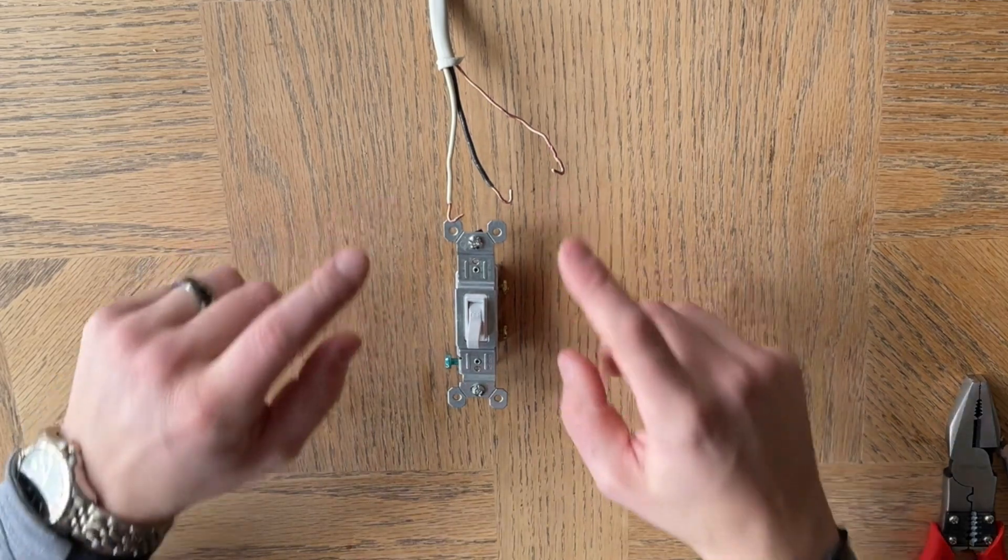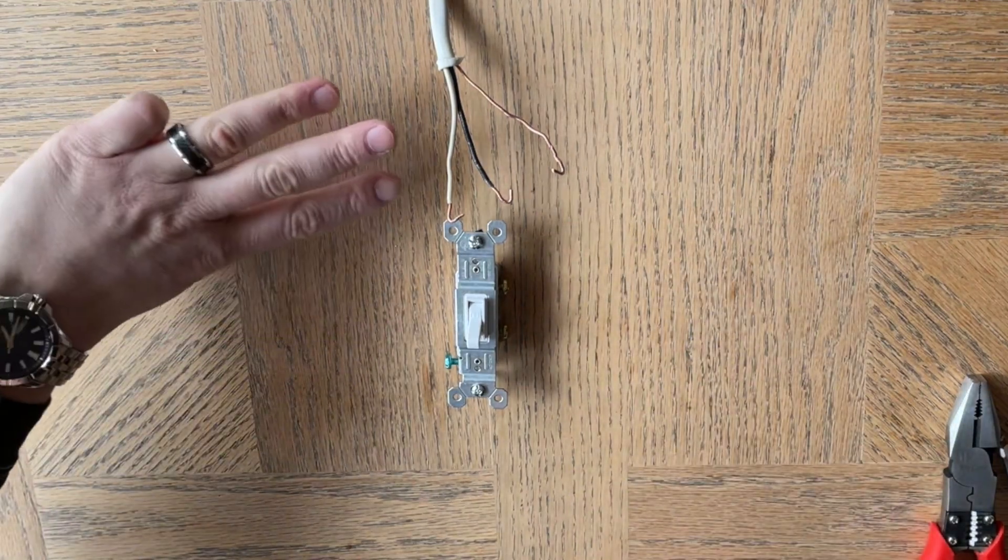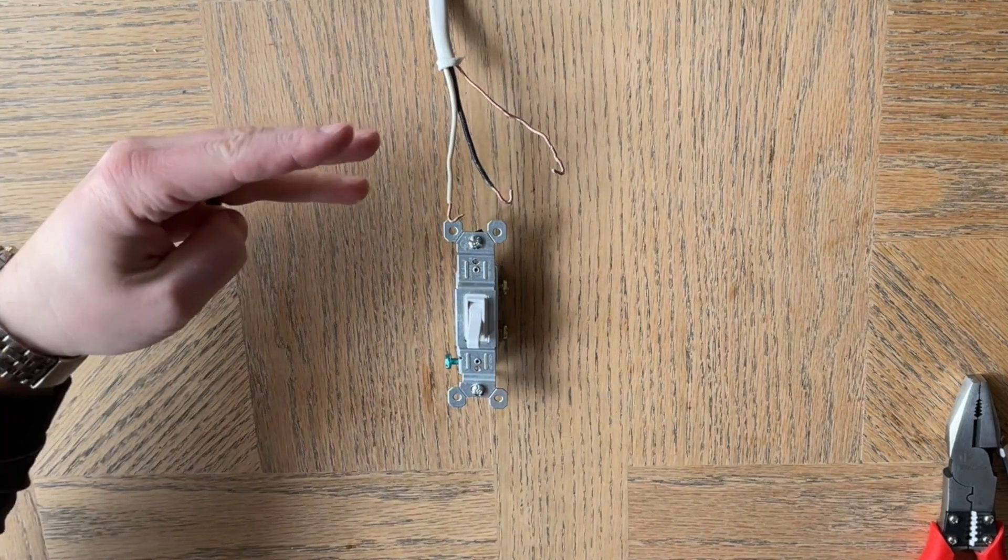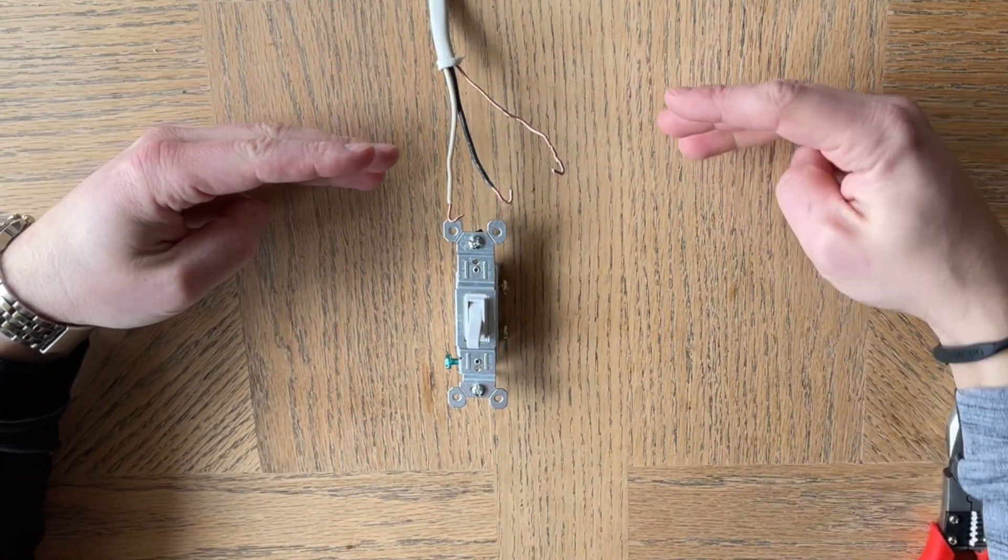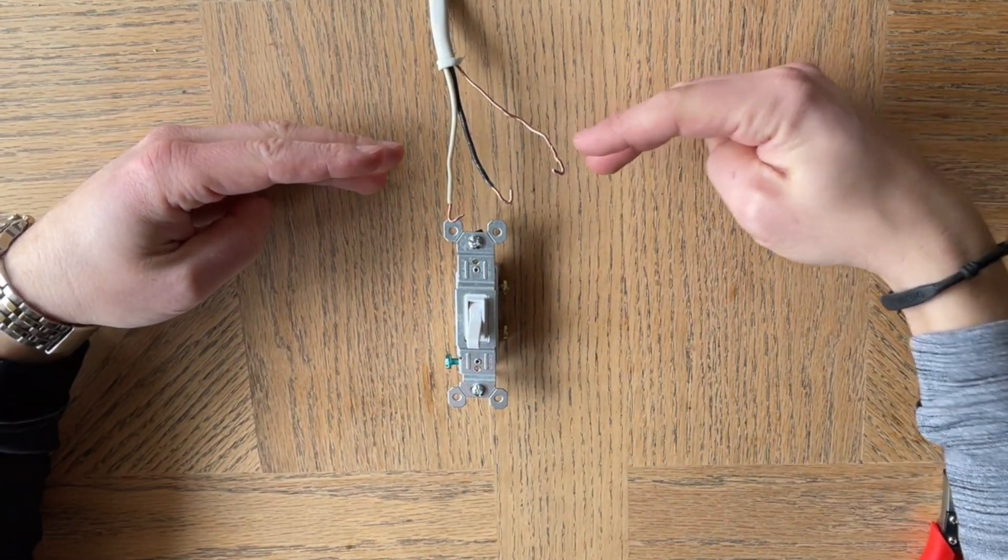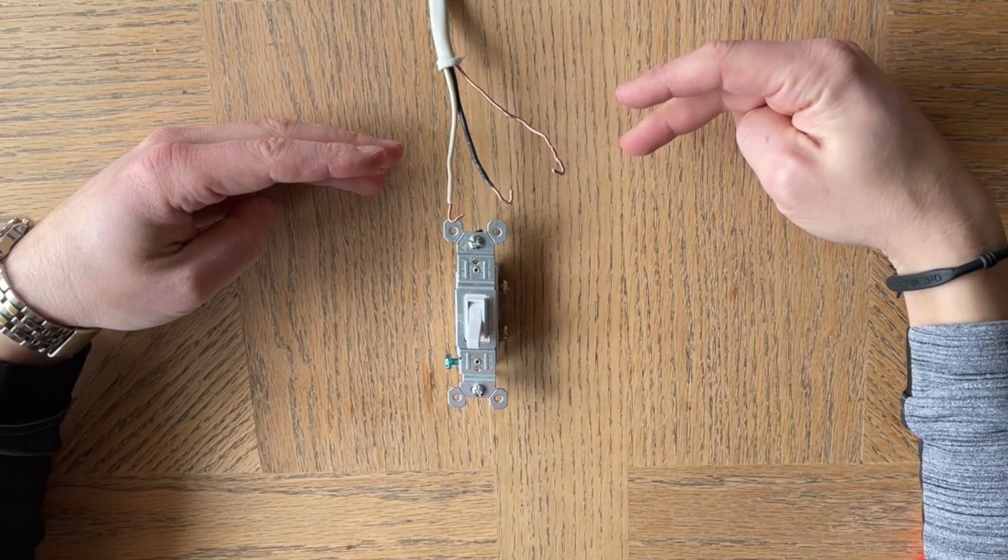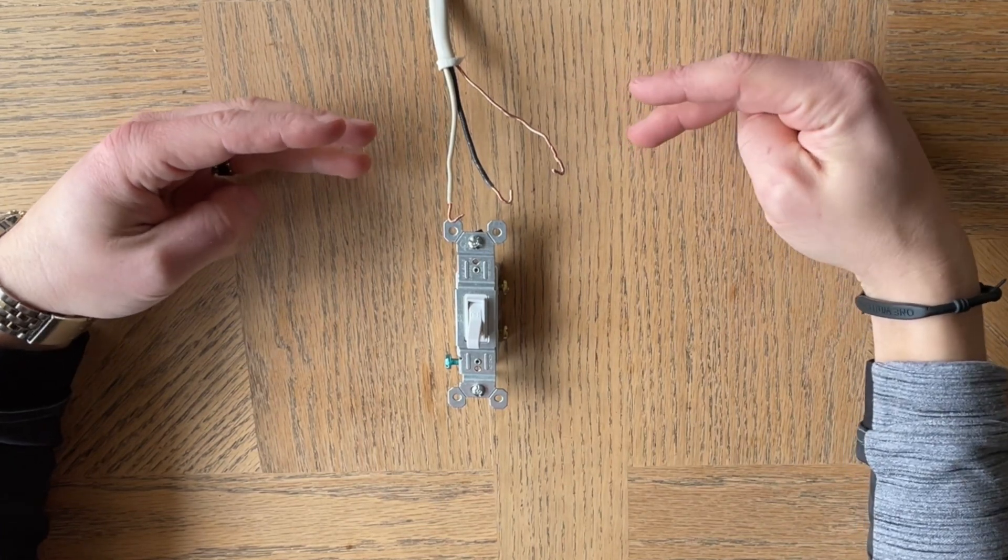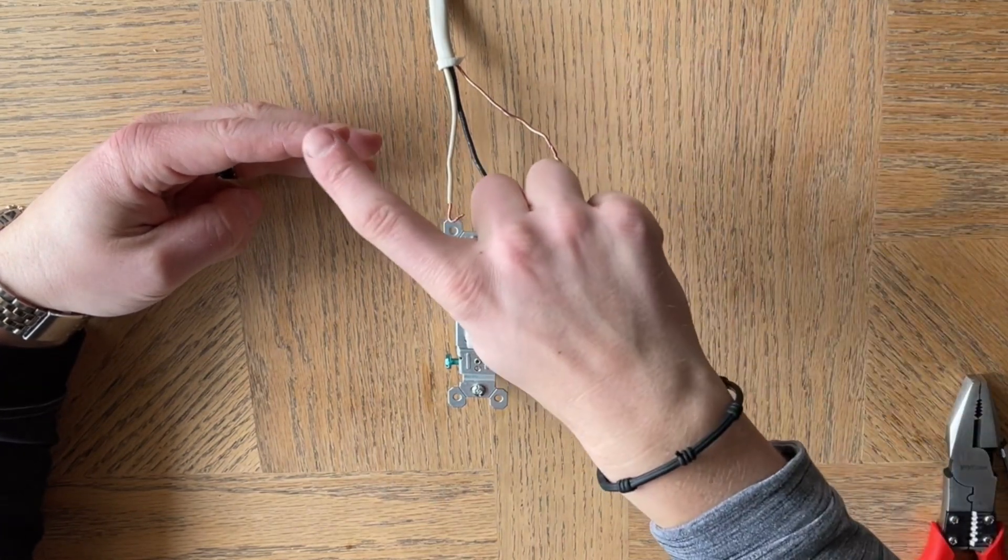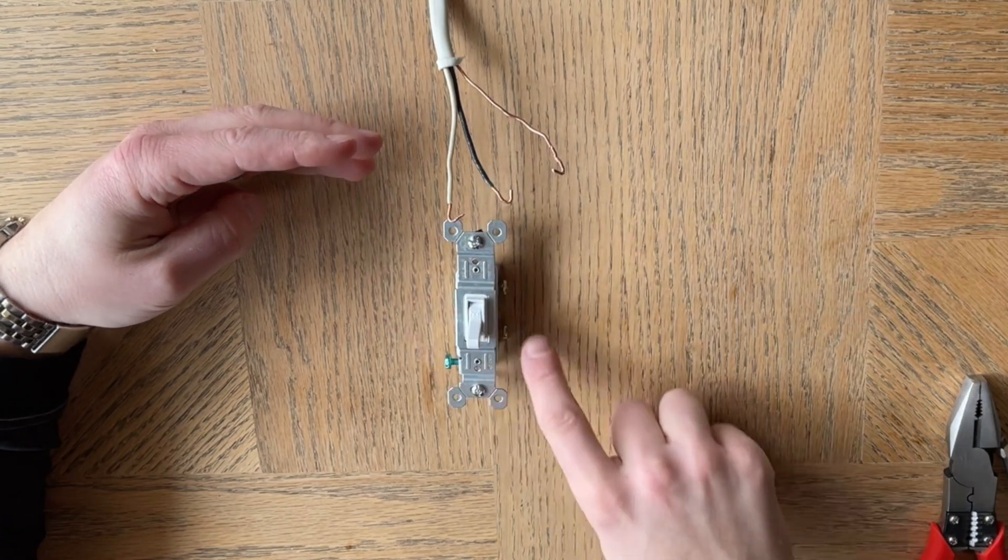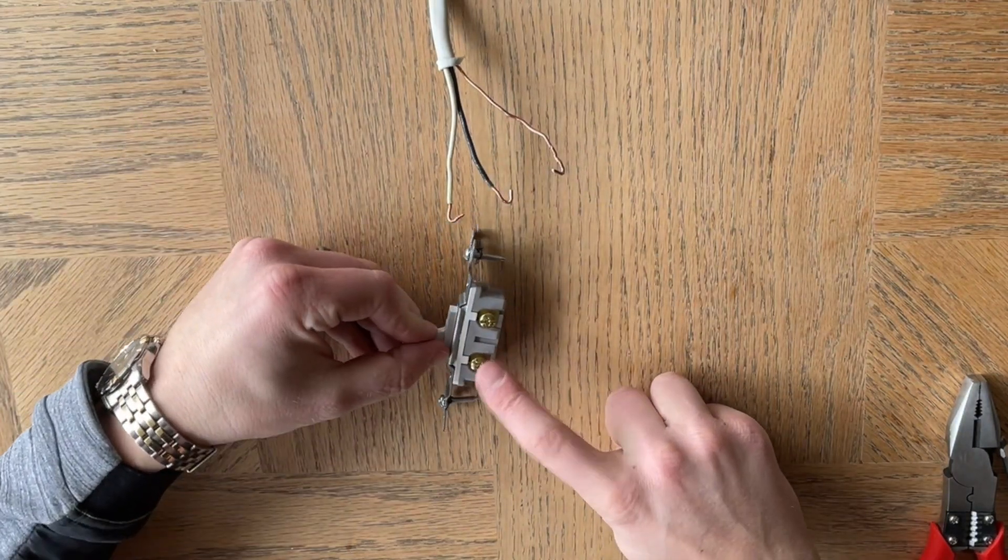Now what's happening is you have a set of three wires probably coming in from the circuit panel and then a set of two going directly to the light fixture. And so what you need to do essentially is take the hot wire from the circuit panel and get it all the way down to this bottom screw.